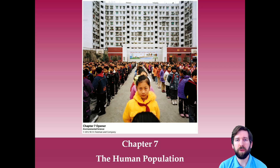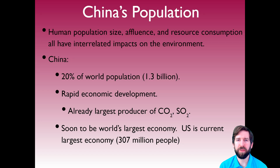Hello and welcome to another one of my APES videos. This time we'll be looking at Chapter 7, Human Populations, and we'll be starting off by talking about China. Human population size, affluence, and resource consumption all have interrelated impacts on the environment, and these three things have changed dramatically within China over the last 50 years.